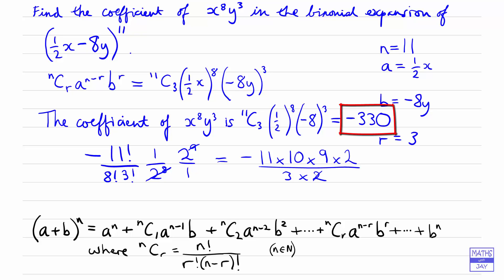So the 2s cancel, the 3 into 9 gives 3. So we've got minus 11 times 3 times 10, so minus 330.